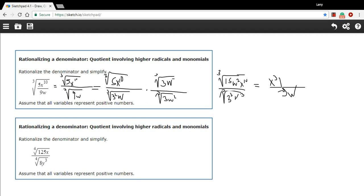Put that on the outside. And that leaves over just 1x. So this would become the cube root of 15w squared x times x cubed over 3w. Let's try one more like that, because that's a lot of steps, and it can be confusing.